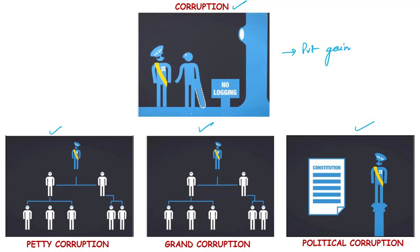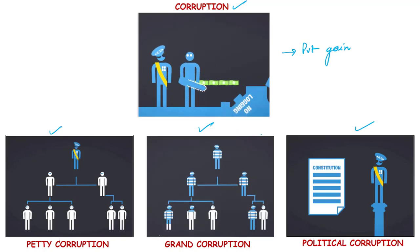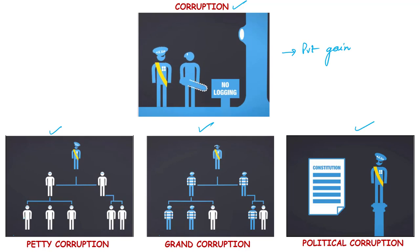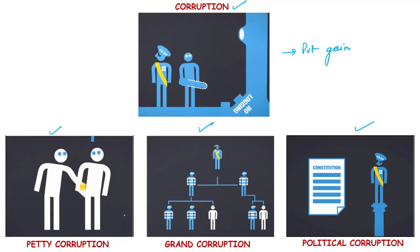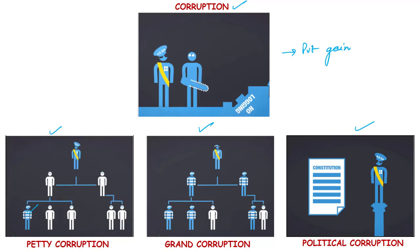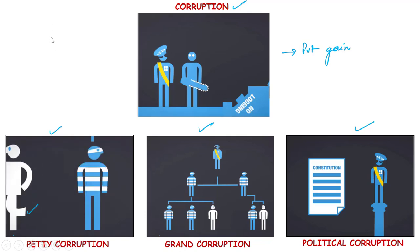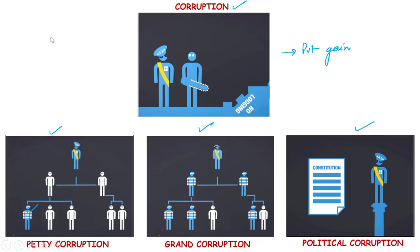Grand corruption consists of acts committed at a high level of government that distort policies or the central functioning of the state, enabling leaders to benefit at the expense of the public good. Petty corruption refers to the everyday abuse of entrusted power by low-level and mid-level public officials in their interactions with ordinary citizens who are trying to access basic goods or services in places like hospitals, schools, and police departments.